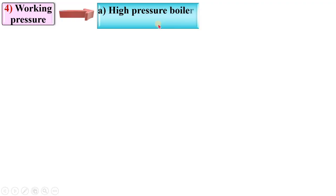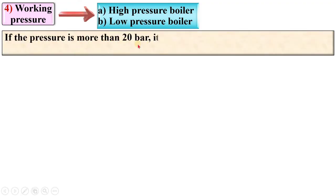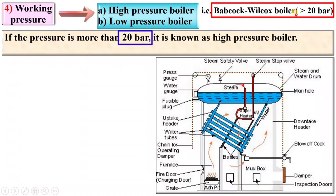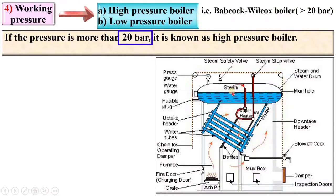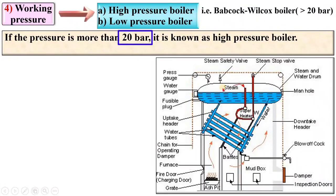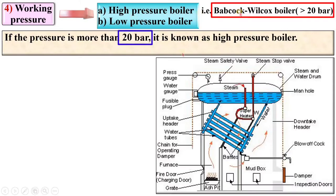According to the working pressure, boilers are classified as high pressure and low pressure boilers. If the pressure is more than 20 bar, it is known as a high pressure boiler. The example is the Babcock and Wilcox boiler, where the pressure of the steam is greater than 20 bar, as shown in this figure.